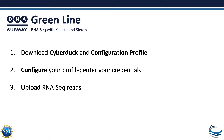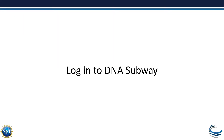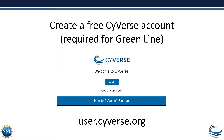Once you've downloaded Cyberduck and the configuration profile, you'll configure, enter your credentials, and then upload your RNA-seq reads to the CyVerse Data Store. In order to use the Greenline, you'll need an account. You can obtain a free CyVerse account at user.cyverse.org, and we encourage every Subway user to get their own account.